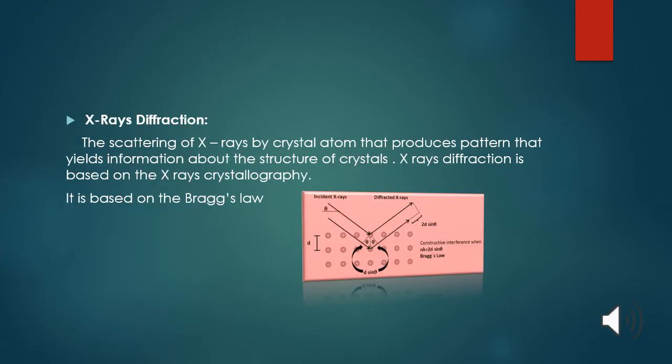Now X-ray diffraction. The scattering of X-rays by crystal atoms that produces patterns that yields information about the structure of crystal. X-ray diffraction is based on X-ray crystallography. It is based on Bragg's law. This picture shows the incident ray attached to a body and then diffracted. This is the diffracted X-rays. It contains 2d sin theta constructive interference when n lambda equals 2d sin theta Bragg's law used in the X-ray diffraction.